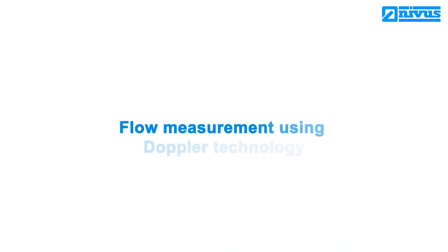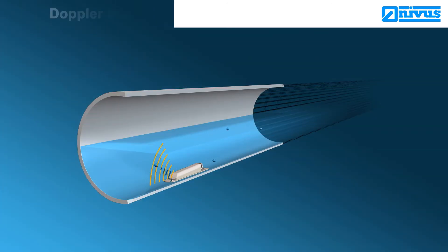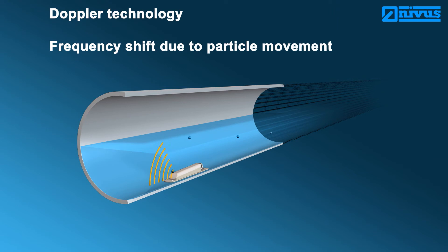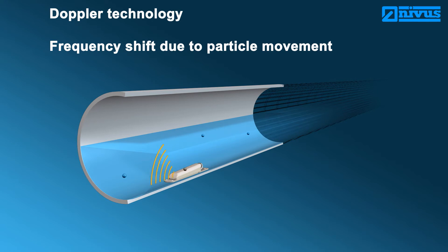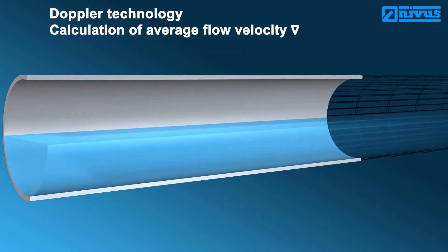Flow measurement using Doppler systems. The Doppler technology uses a sensor continuously transmitting ultrasonic signals at a constant frequency. The particles contained in the medium reflect the signal. The particle movement shifts the frequency of the reflected signal, and the frequency shift is detected by the sensor. The greater the particle velocity, the greater the frequency shift. Doppler measurement is a spot velocity measurement.